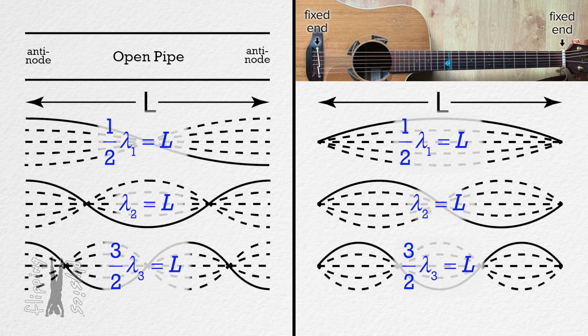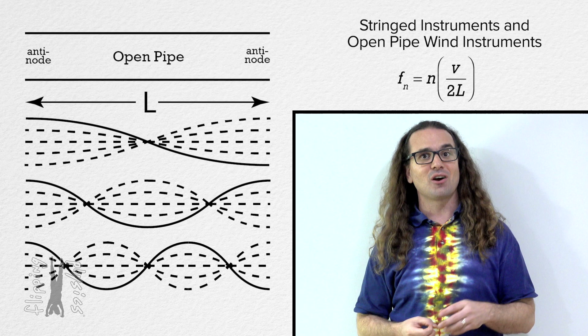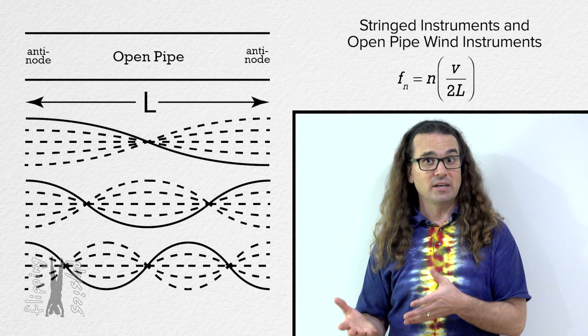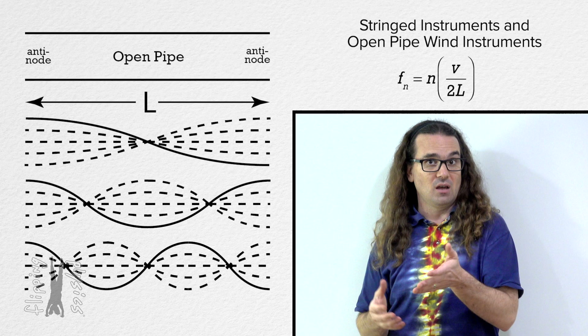Does that mean the frequency equation is the same? Yes. The wavelengths for the standing wave patterns are the same for both open pipe and stringed instruments, so the equations are the same. The harmonic number is the same; v is the speed of the wave in the medium. For stringed instruments that is the speed of the wave on the string, and for open pipe instruments it is the speed of sound in air.